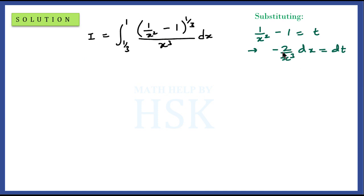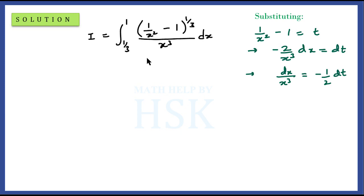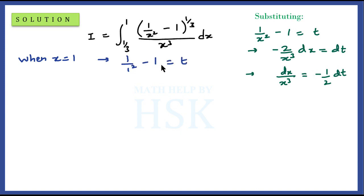Differentiating both sides gives minus 2 upon x-square dx equals dt. Since we have x-cube in the denominator, we can write dx upon x-cube as equal to minus 1 by 2 dt. Because we made the substitution t equals 1 upon x-square minus 1, the limits also change. When x equals 1, t equals 1 upon 1 minus 1, which gives t equals 0. This is the upper limit.